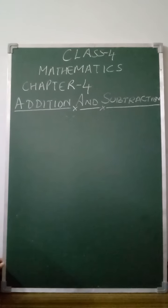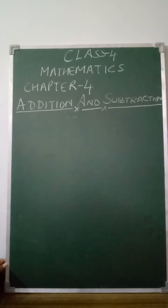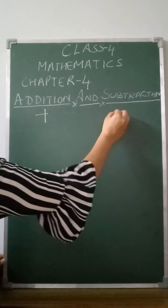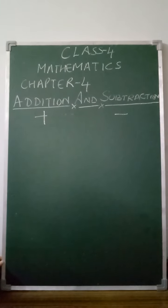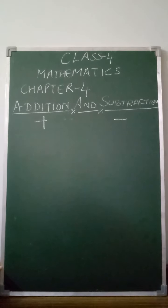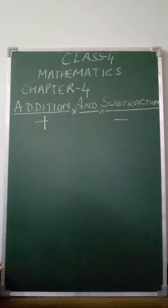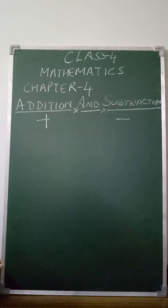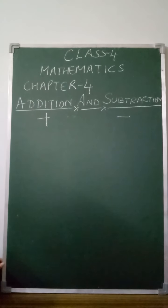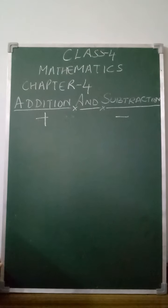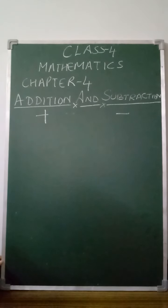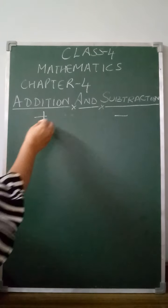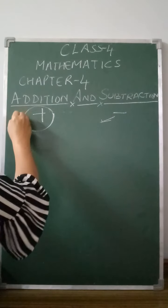Addition and subtraction means this is the combined operation — plus and minus come together in one question. This is also called 'simplify' or 'solve the question.' When a question says simplify, it means two or more operations are given. First we learn how to do two operations together. There is one rule: whenever addition and subtraction are given together in any expression, the first step is to always add first.